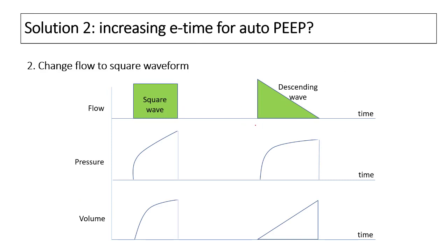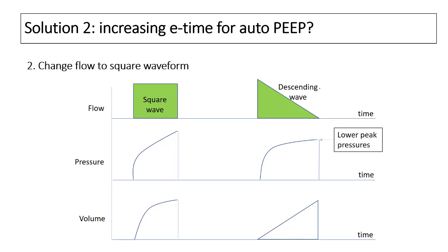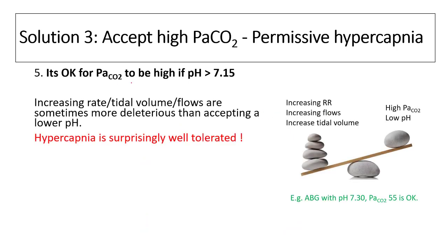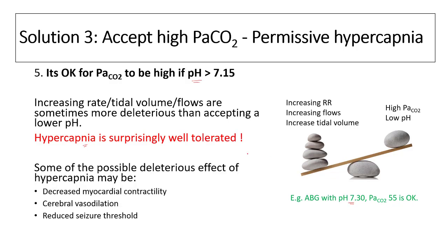Third, changing the waveform from a descending wave to a square waveform can provide extra time for exhalation. Descending waves are mostly used because they are more comfortable and result in lower peak pressures, but they take longer to deliver the same volume. If you have done everything and cannot correct hypercapnia, it is acceptable for PaCO2 to be high if the pH is more than 7.15. For example, a pH of 7.3 with PaCO2 of 55 requires no ventilator changes.